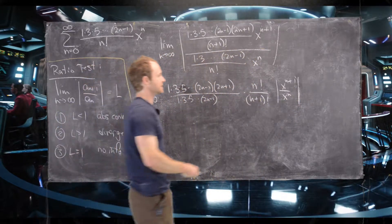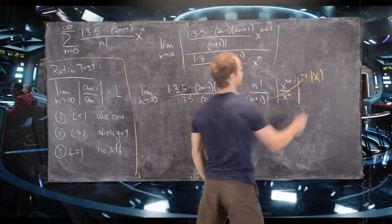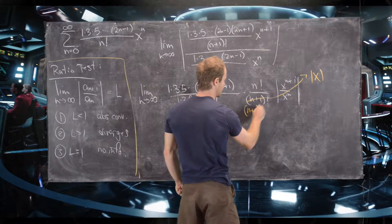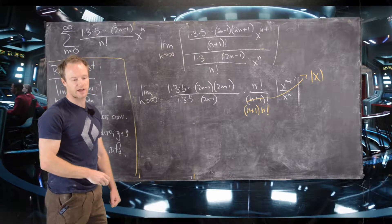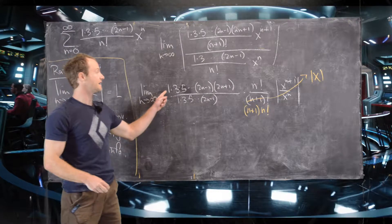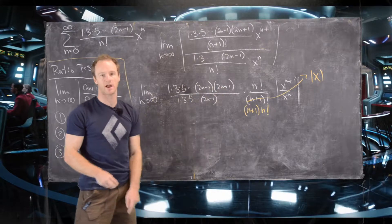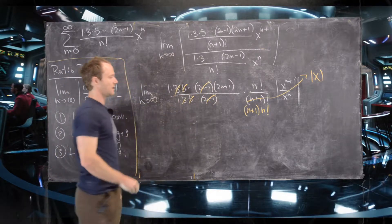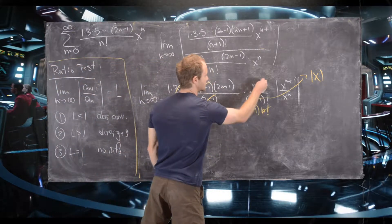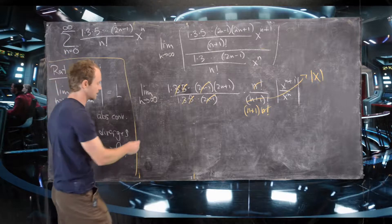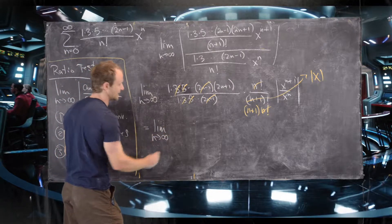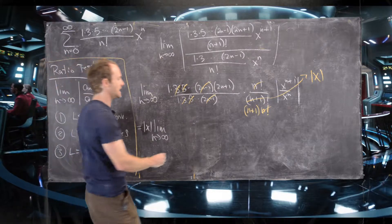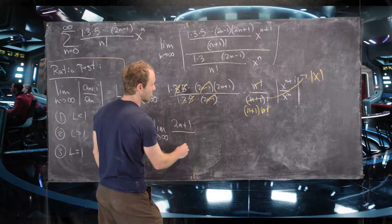We can simplify quite a bit. The x to the n plus 1 over x to the n cancels down to x. We rewrite n plus 1 factorial as n plus 1 times n factorial — a general trick in problems like this. The rising product up to 2n plus 1 includes everything in the denominator, so we cancel those terms. Then the n factorials cancel, leaving us with the limit as n goes to infinity of 2n plus 1 over n plus 1, times the absolute value of x.